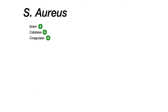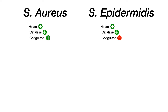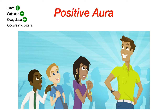This mnemonic is really useful because Staph aureus gets compared against Staph epidermidis all the time. The major difference is that Staph epidermidis is coagulase negative, while Staph aureus is coagulase positive — this is high yield for USMLE and COMLEX. If you use this mnemonic and remember that Staph aureus has the positive aura, everything is positive, so coagulase negative means it can't be Staph aureus.